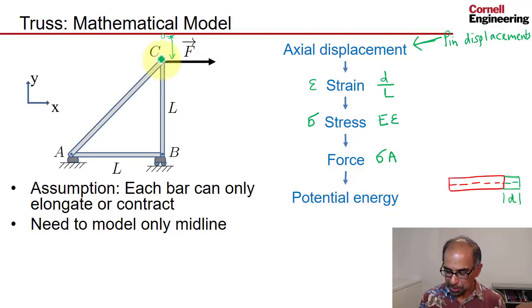Which means that once I know each of these pin displacements, I can figure out what the potential energy is. So my primary unknowns are the pin displacements.